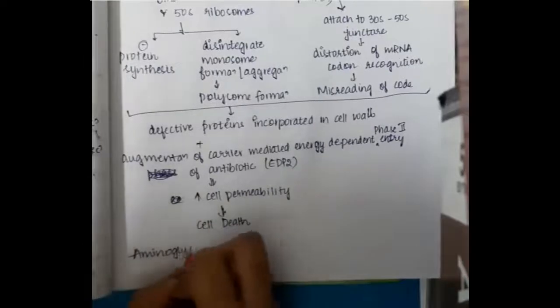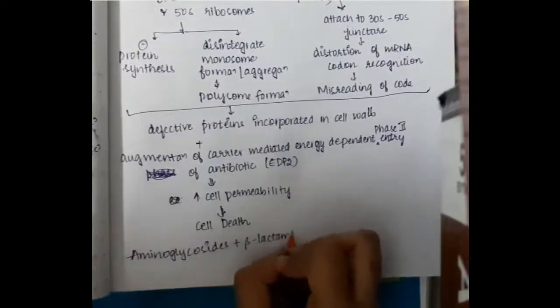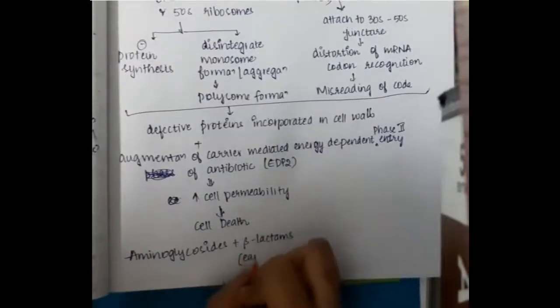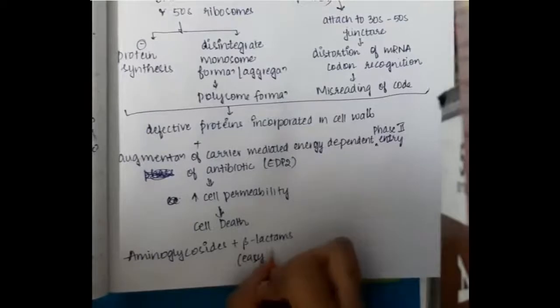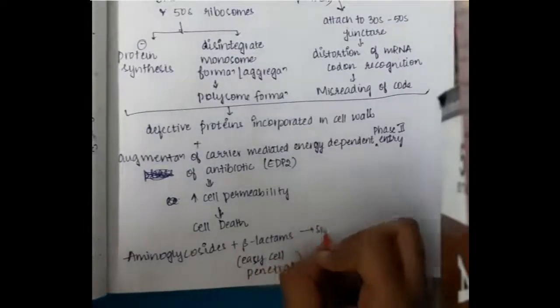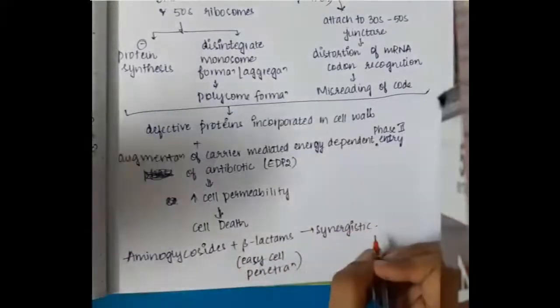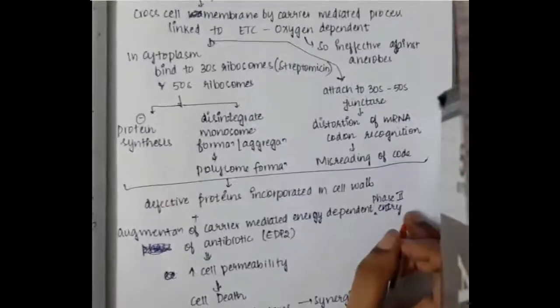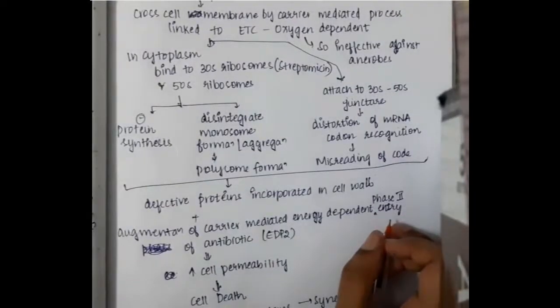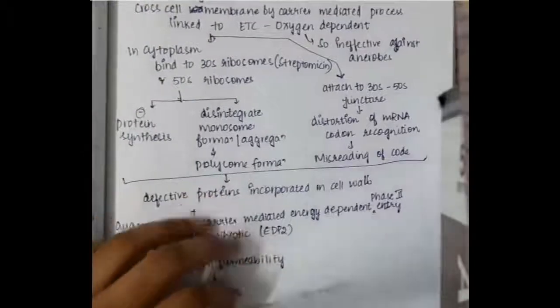When aminoglycosides are combined with beta-lactams, they cause easier cell penetration, resulting in a synergistic effect. Aminoglycosides combined with beta-lactams therefore have a synergistic effect.